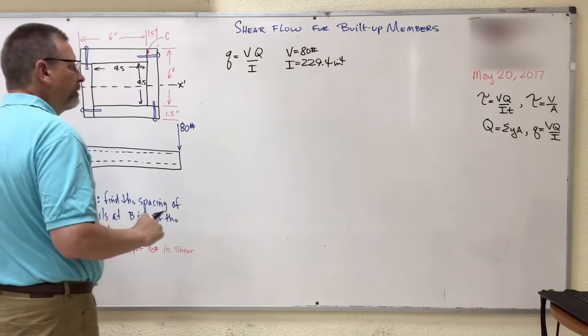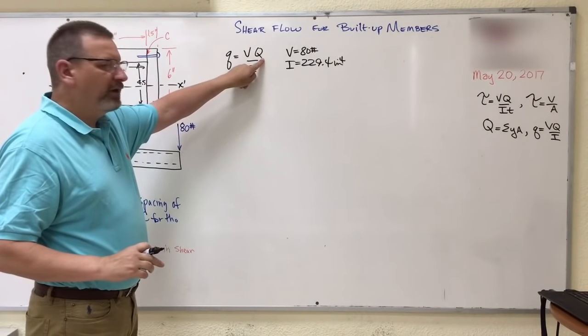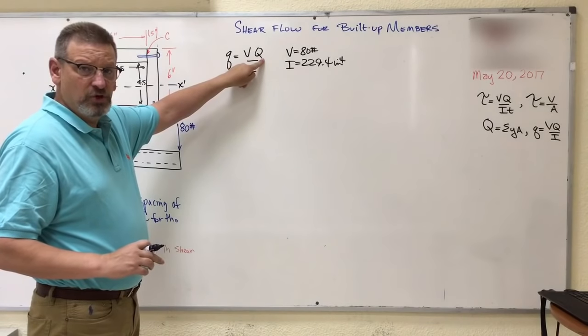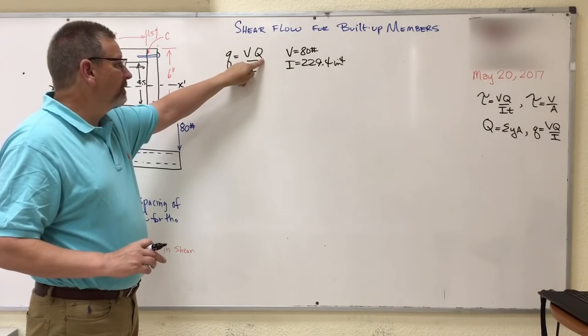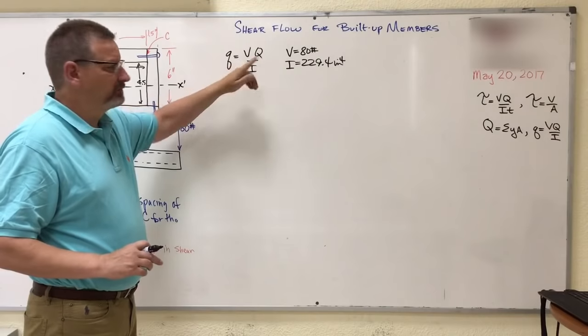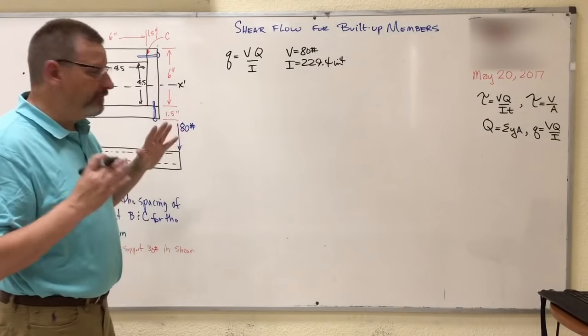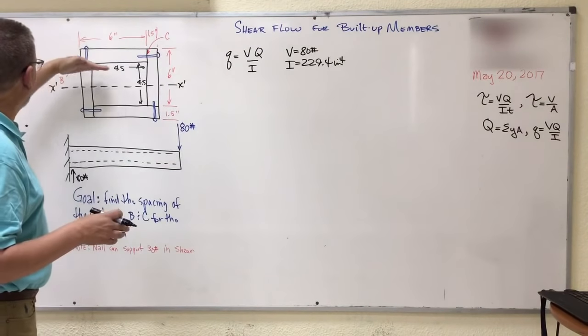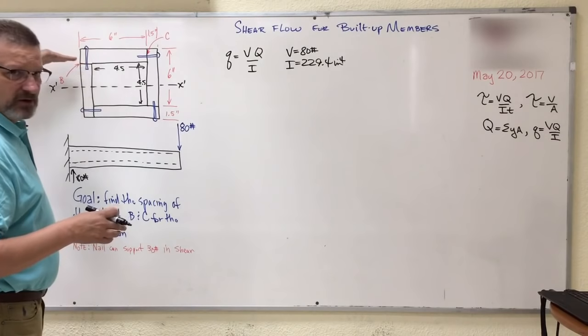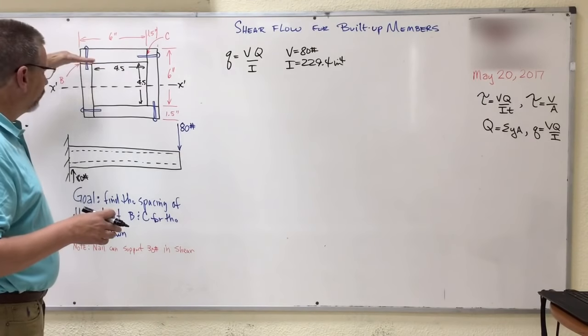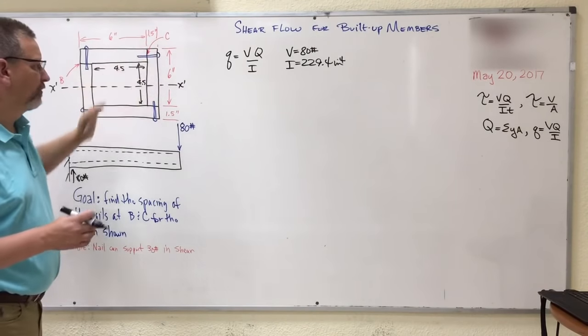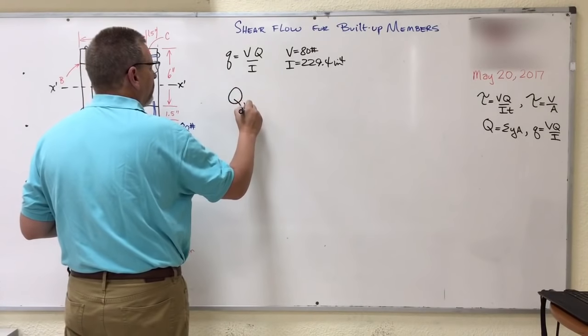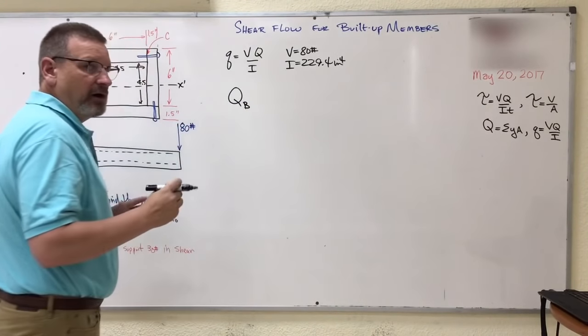And here comes the hard part. I think the hard part of these is what is capital Q, right? What is that first area moment of inertia? So let's do it for B first. And so B is the one that I'm trying to shear. The shear plane is horizontal. The shear plane over here is vertical. So let's do Q for point B.